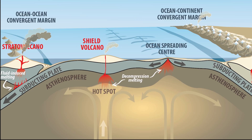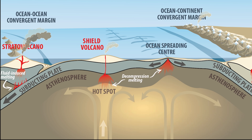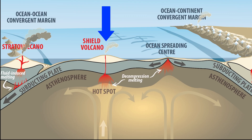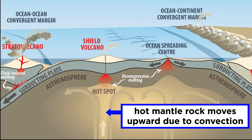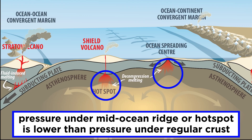Let's start with decompression melting. This is exactly what it sounds like — melting the mantle by lowering its pressure. Decompression melting is responsible for the volcanism above both mid-ocean ridges and hot spots. Beneath these environments, hot mantle rock is moving upward due to mantle convection. Since hot material is less dense than cold material, the weight of a column of hot material will be less than that of cold material. Therefore, at a given depth, the pressure is lower beneath a mid-ocean ridge or hot spot than it is beneath a regular piece of crust.